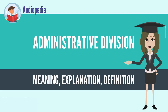For clarity and convenience, the standard neutral reference for the largest administrative subdivision of a country is called the first-level administrative division or first administrative level. The next smaller is called the second-level administrative division or second administrative level.